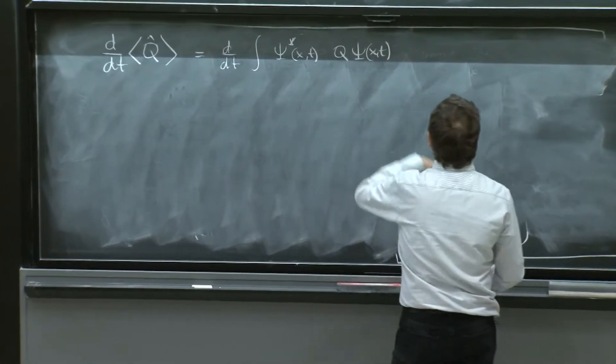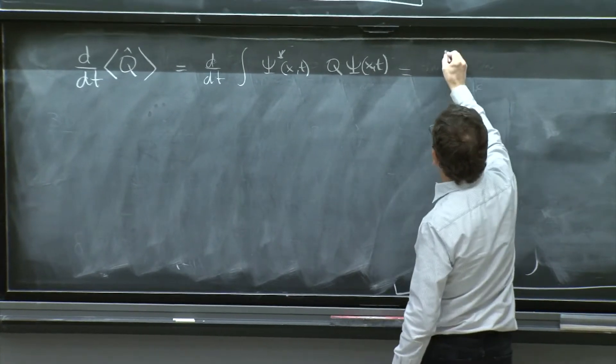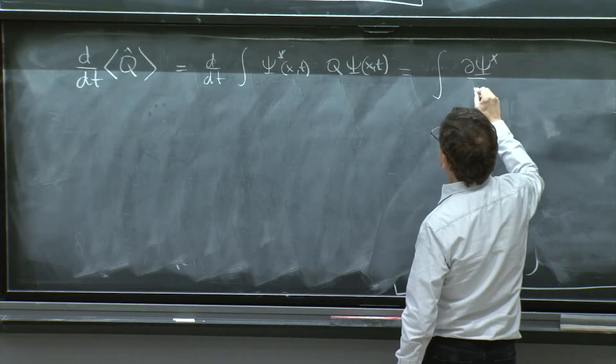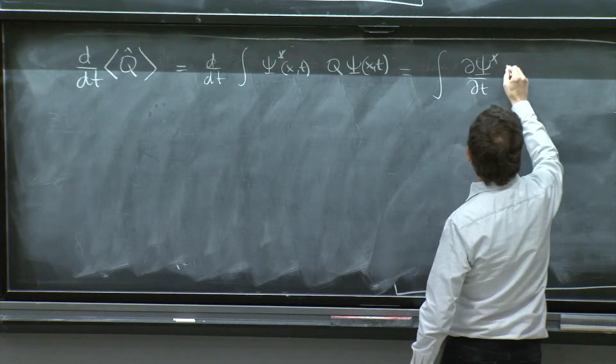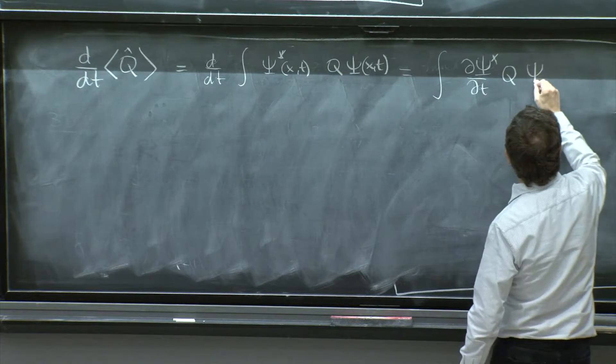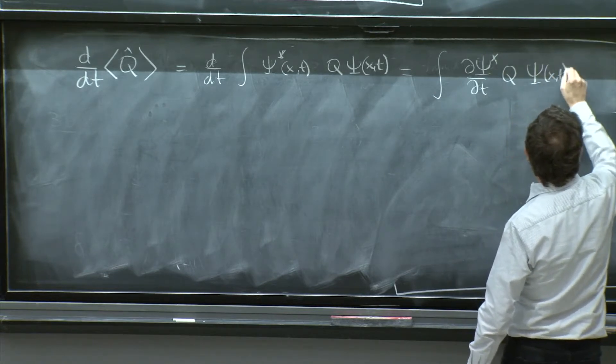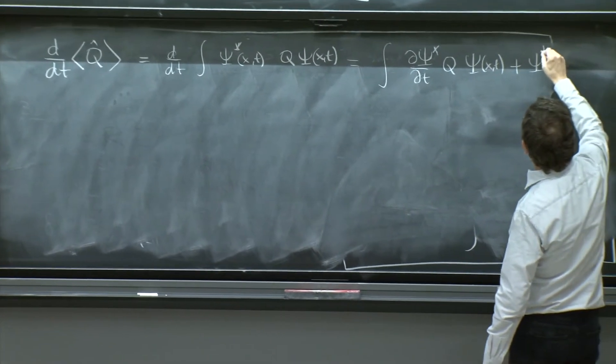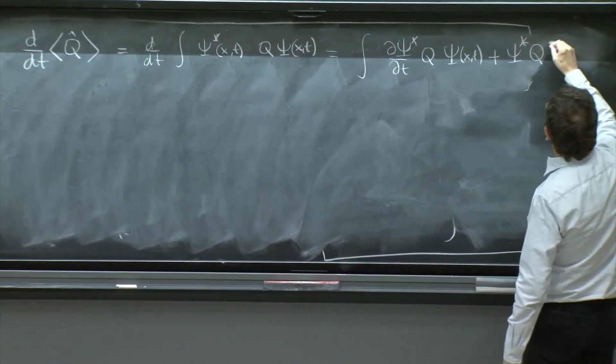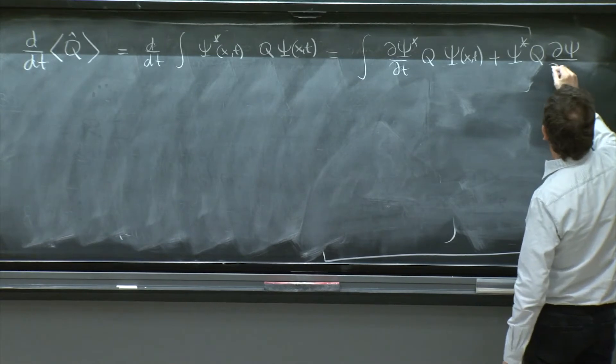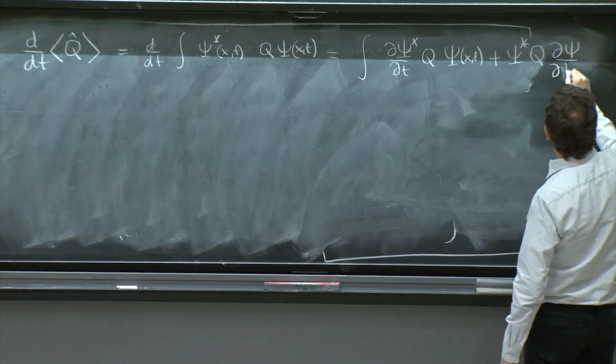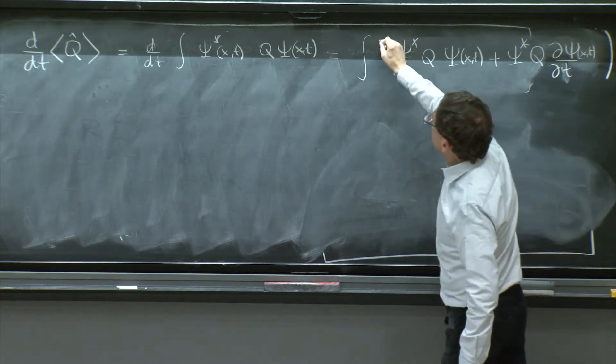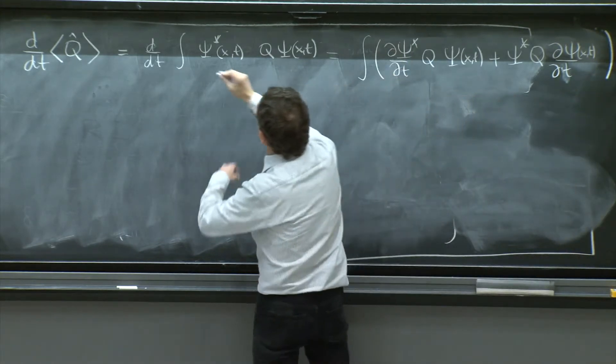And the d dt acts on the two of them. So it gives you integral partial psi star dt, q psi of x and t, plus psi star q partial psi dt. And this is the integral over dx.